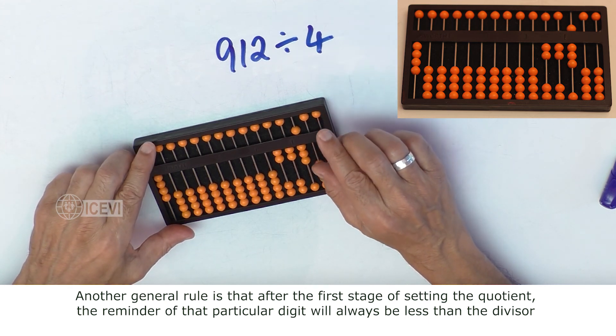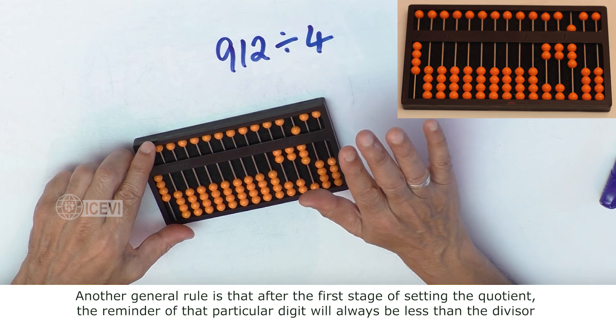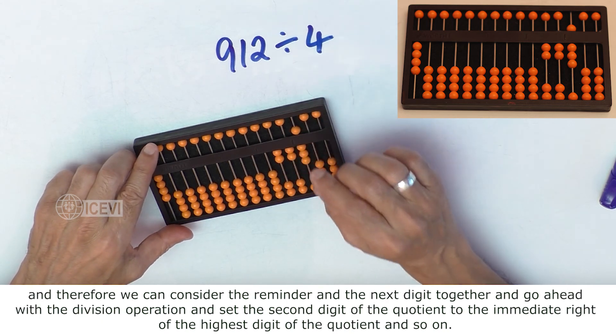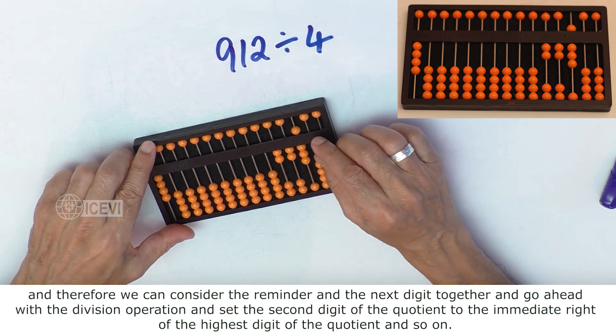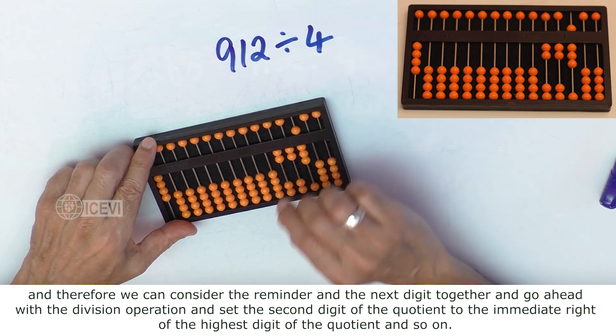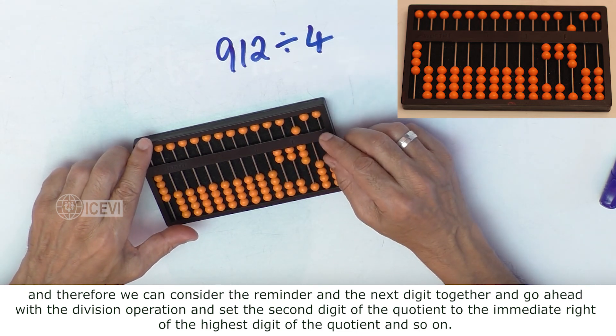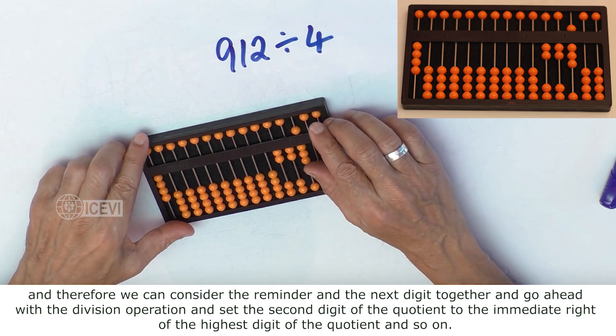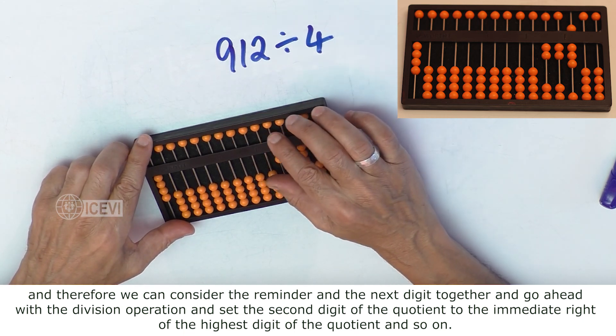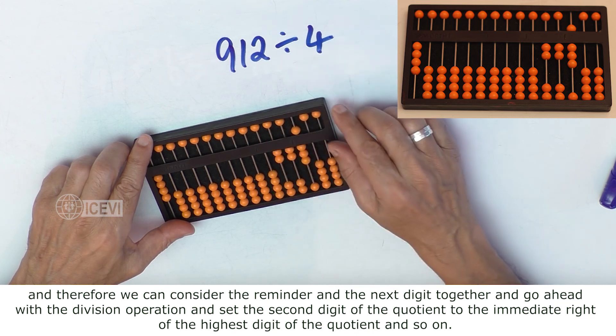And therefore we can consider the remainder and go ahead with the division operation and set the second digit of the quotient to the immediate right of the highest digit of the quotient and so on.